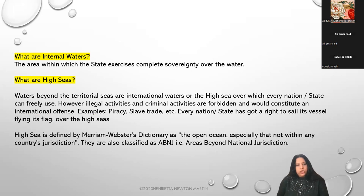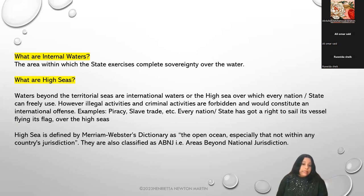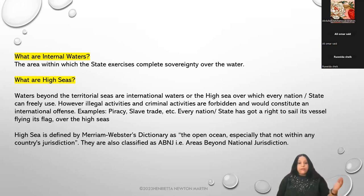In contiguous zones, state parties are granted special limited jurisdiction. Waters beyond the territorial seas - international waters or the high sea - are those over which every nation or state can freely use. However, illegal activities and criminal activities are forbidden and would constitute an international offense. Examples include piracy and slave trade.